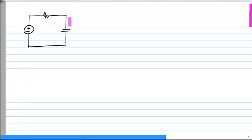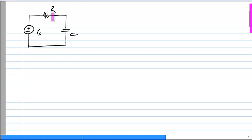Any circuit with a single capacitor and any number of independent sources and other linear components can be reduced to this form: Vs, R, and C. This may be the actual circuit, or Vs and R could be the Thevenin equivalent of whatever is connected to the capacitor. As long as you have a single capacitor, you will have a first order system at most, and this will be the equivalent circuit.